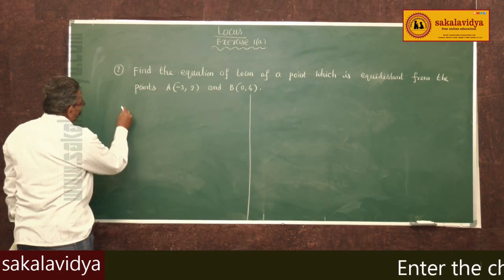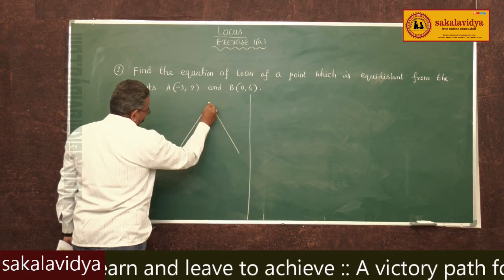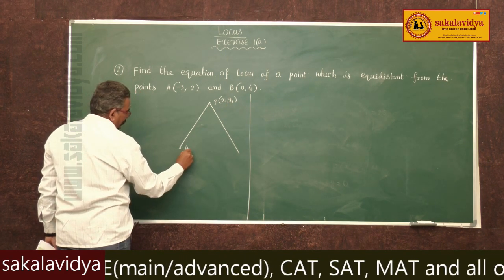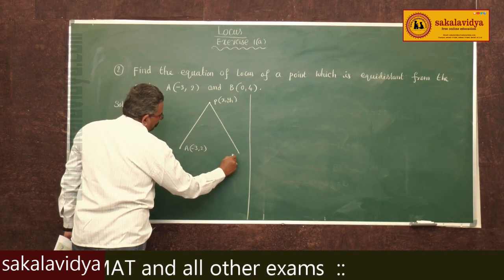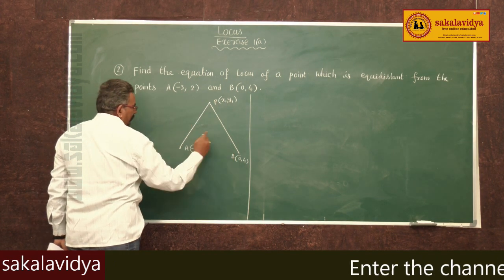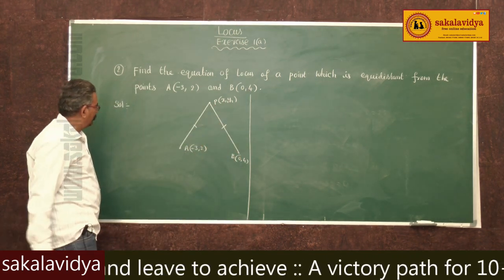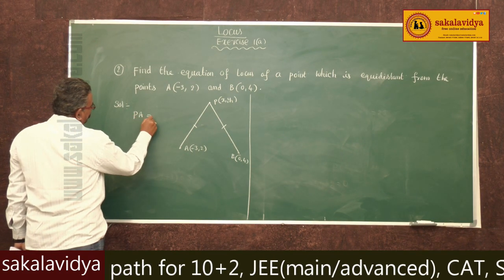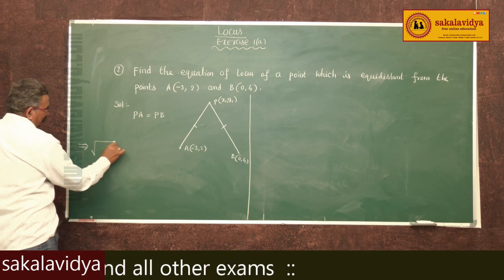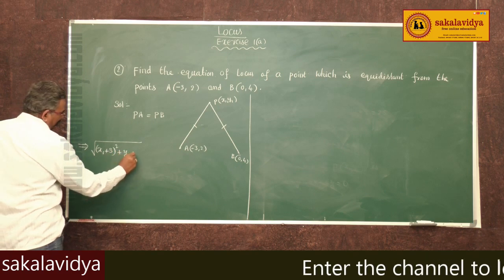Let us draw a figure. Say P(x1, y1) is the point on the locus; this point is A(-3, 2) and this point is B(0, 4). Since P is equidistant from A and B, the distance from P to A equals the distance from P to B. So we write PA equals PB. Using the distance formula, PA can be written as: root over (x1 plus 3) whole square plus (y1 minus 2) whole square.